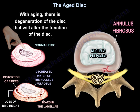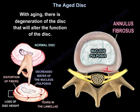Here is a normal disc, and here there is an aging disc with loss of disc height, distortion of the annulus fibrosus fibers, with tears in the lamina, and decreased water content of the nucleus pulposus.